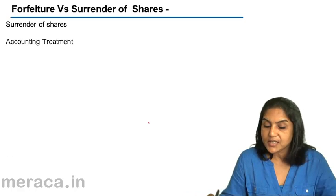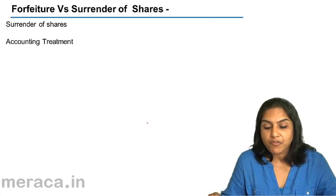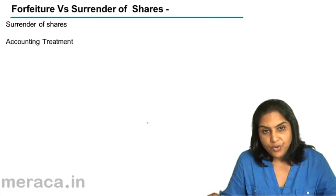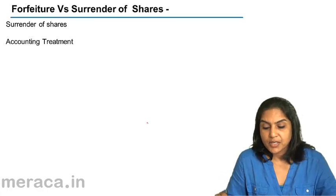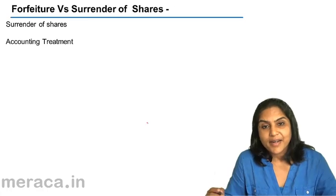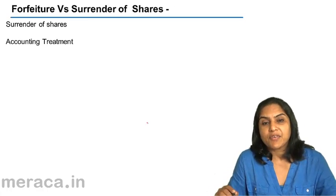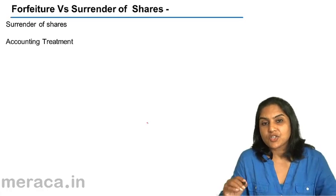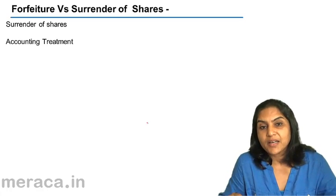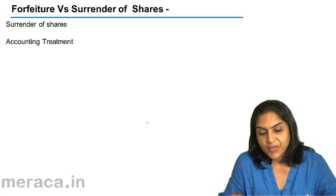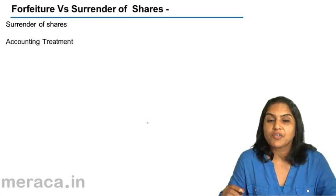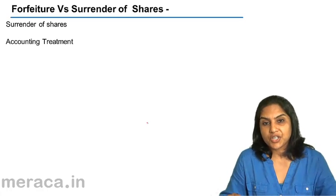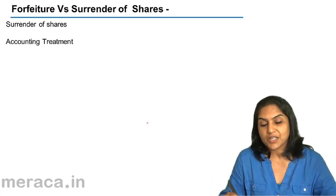For forfeiture versus surrender of shares: a shareholder having paid one or two installments on shares may surrender his shares to the company, willingly giving up his shares saying that he is not in a position to pay the remaining installments. This is called surrender of shares. It is not forfeiture in the sense that the company has not initiated the action to forfeit the shares.